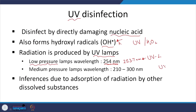Medium pressure lamps emit radiation over a range of wavelengths rather than monochromatically. An issue with UV is interference due to absorption of radiation by other dissolved substances. If I have a UV lamp submerged and there are suspended solids or other compounds that absorb UV, the photons may not reach the target cell, limiting effectiveness. I might then need higher intensity to compensate.